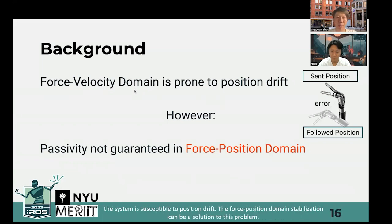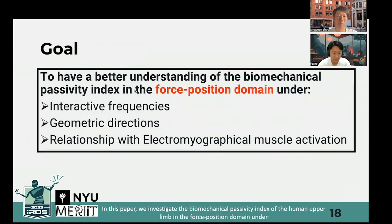The force-position domain stabilization can be a solution to this problem. However, the passivity of the human's biomechanics is not guaranteed in the force-position domain. In this paper, we investigate the biomechanical passivity index of the human upper limb in the force-position domain under varying interactive frequencies, geometric direction of interaction, and electromyographical muscle activation levels.